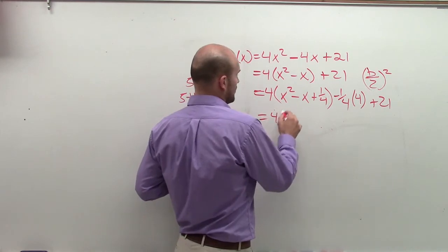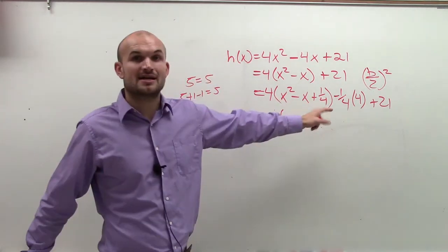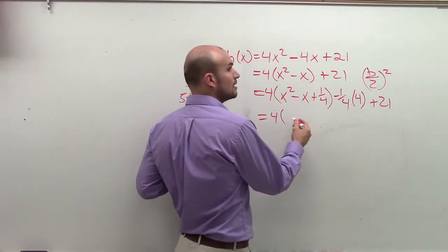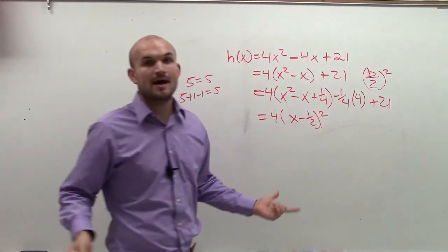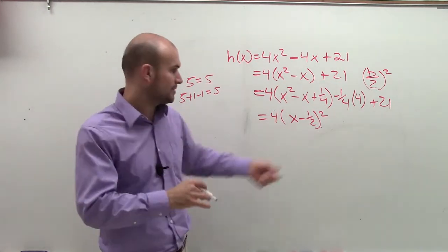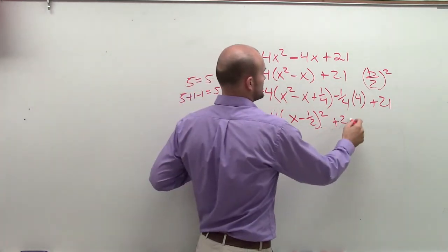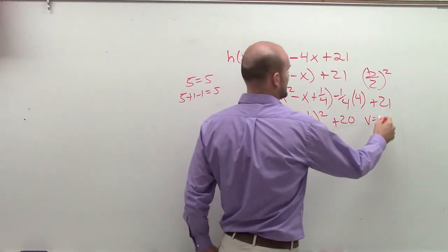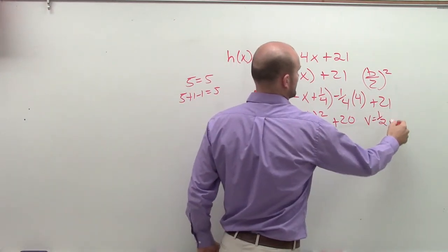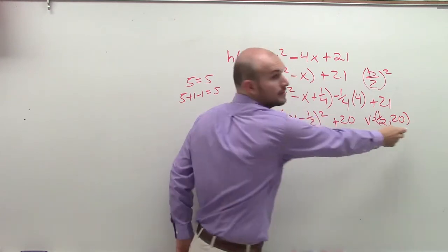So therefore, now I have 4 times, let's write this down as a complete binomial squared, which would be x minus 1/2 squared, right? I proved that by telling you a perfect square trinomial. So now my vertex, we can determine, is a positive 1/2 comma 20.